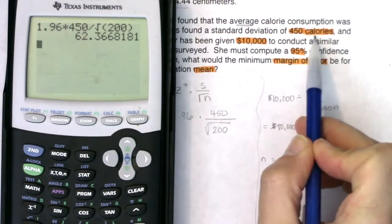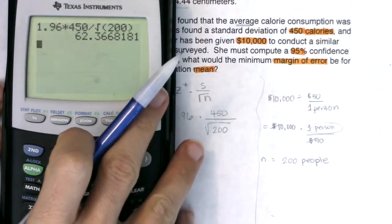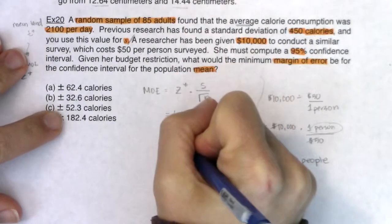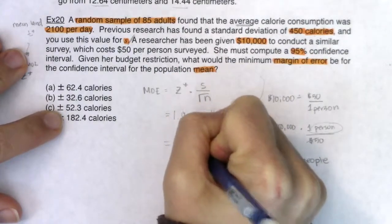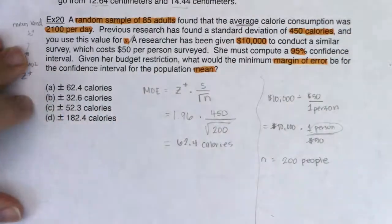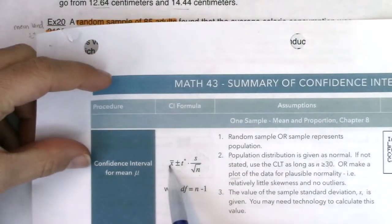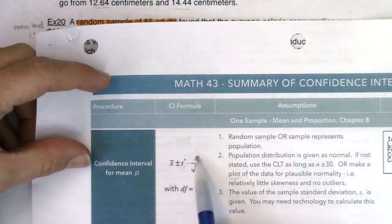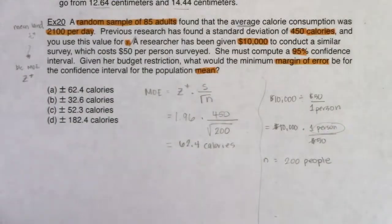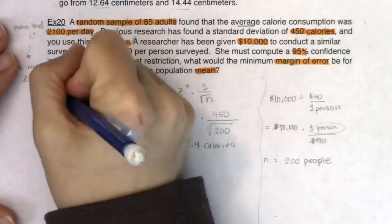The units are calories because that's the unit for our variable. The plus-or-minus is there because that's how we always construct our interval: x-bar (our point estimate) plus or minus the margin of error, which is t-star (or in this case z-star) times S over the square root of N. So the answer to this one is option A.